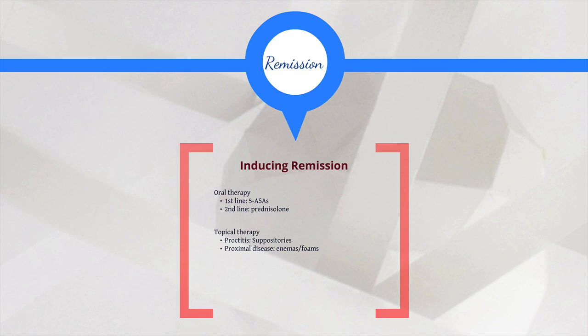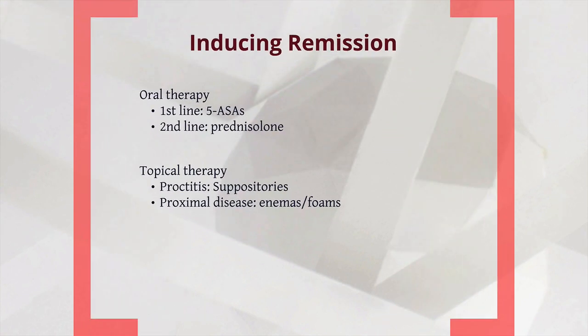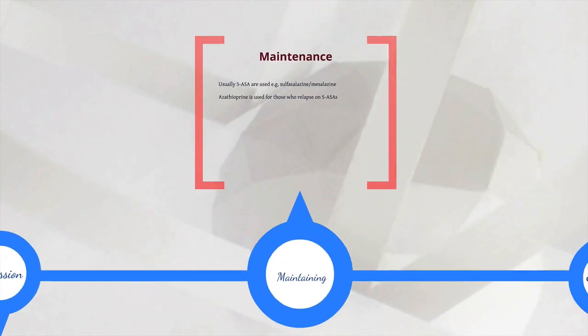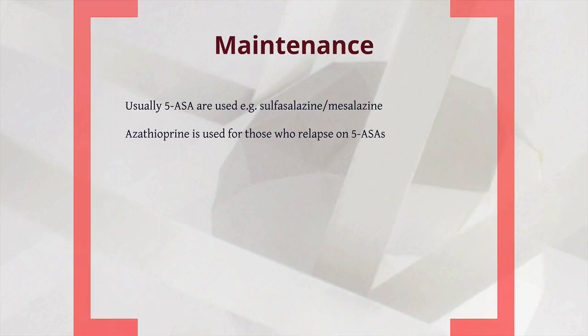For inducing remission — whether in an admitted patient or one presenting to outpatients — divide therapy into oral and topical. For oral therapies, the first-line treatment is 5-ASAs, and the second line is prednisolone. Topical therapies depend on disease location: for proctitis, suppositories suffice, but for more proximal disease, enemas and foams may be needed. For maintenance, patients with UC are often on 5-ASAs — most commonly sulfasalazine and mesalazine. Azathioprine is used for patients who relapse while on these agents.